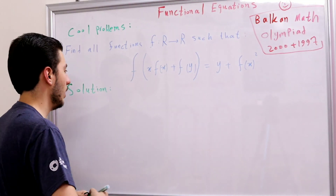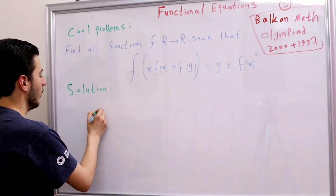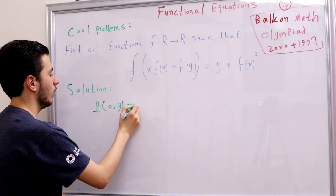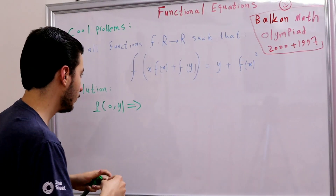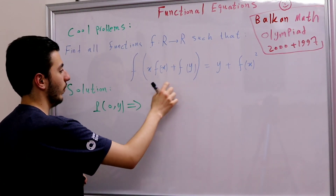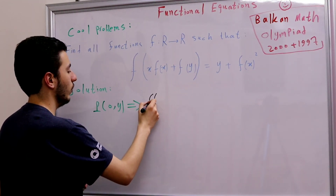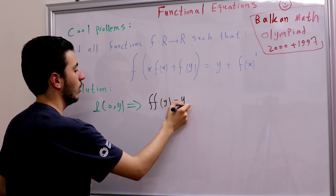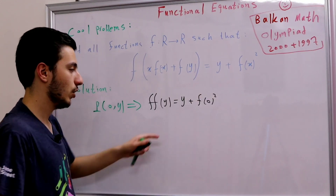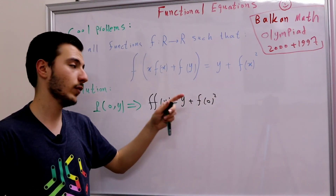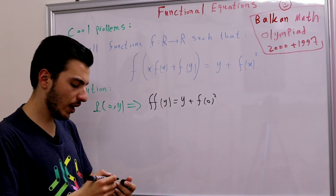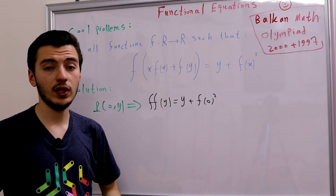Let's substitute x with zero — that's the simplest thing. P(0, y): we get f(f(y)) = y + f(0)². So our function is surjective, because f of something equals a surjective quantity.